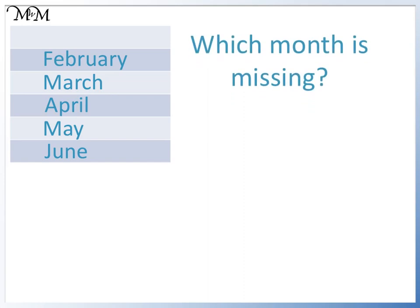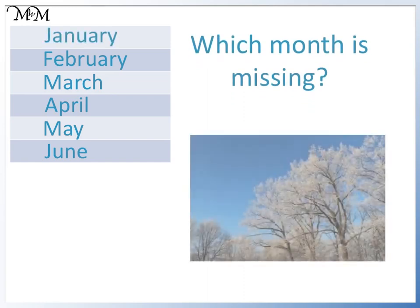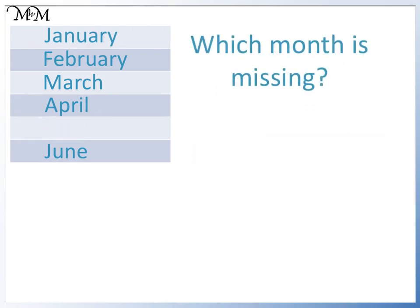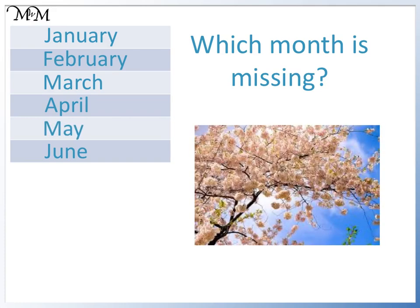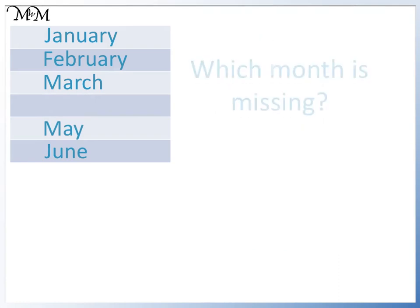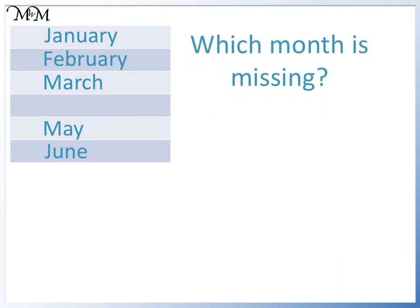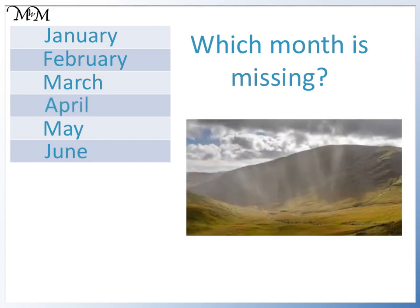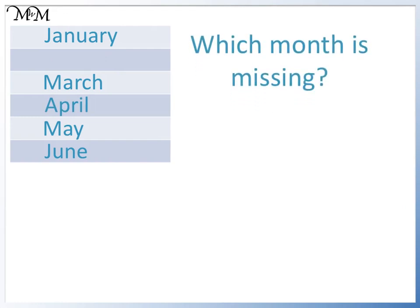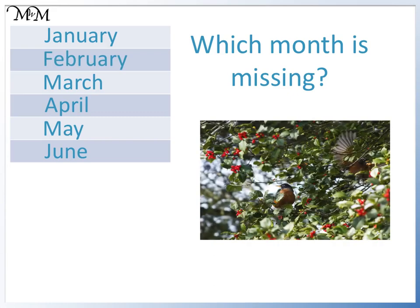Which month is missing? January, the first month. Which month is missing now? It's May. Which month is missing? It's after March and before May. It's April. Which is the second month that we are missing? It's February. February is the second month.